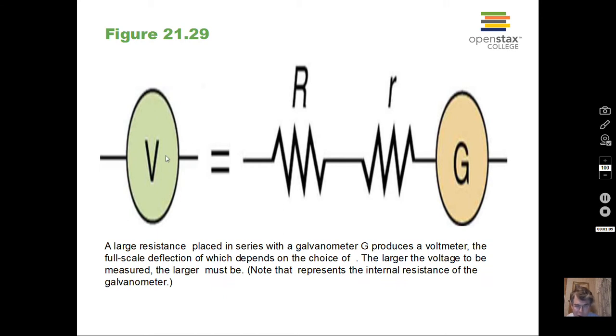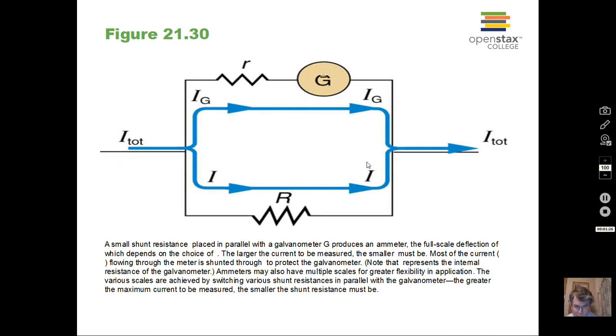We're not going to talk much about the construction of voltmeters. The voltmeter and the ammeter at their heart have a galvanometer, a sensitive current device. The voltmeter has a high resistance because a large resistor is put in series with the galvanometer.